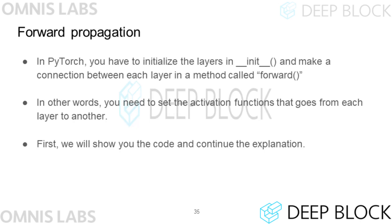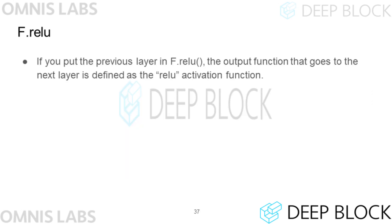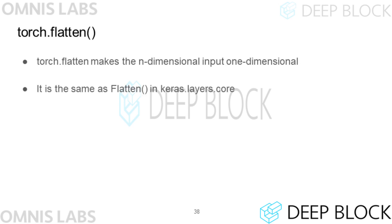In PyTorch, when defining a neural network class, you need to define how each layer is connected in a method called forward. Check out the forward method. Unlike Keras, each layer in PyTorch is passed as an argument to the activation function. You can think of the x parameter of forward as an input. When the input of the first convolutional layer comes in, the output goes into the rectifier function, then the value goes into the pooling layer, and the value from the pooling layer is used as input for the next convolutional layer. The torch.flatten function is used to change the dimension of the input data to one dimension, similar to Keras's Flatten layer.